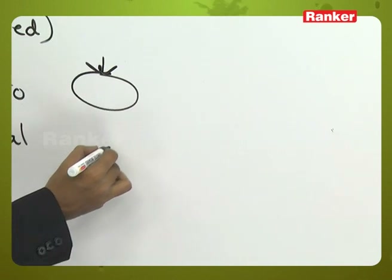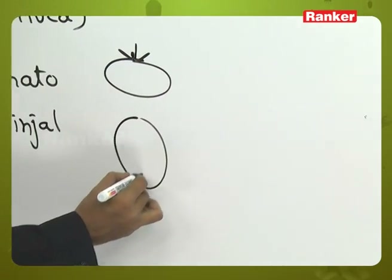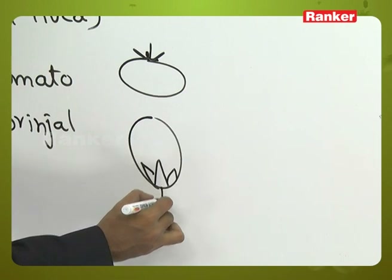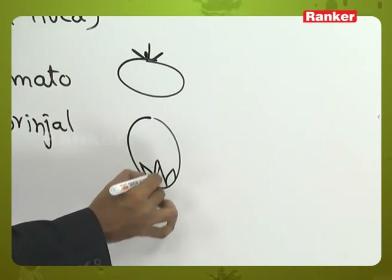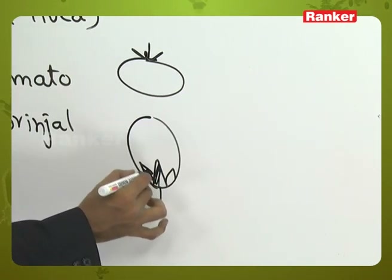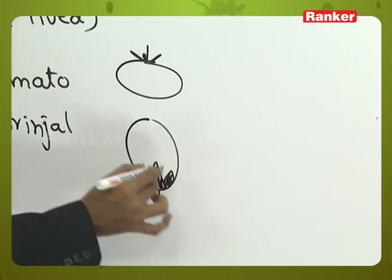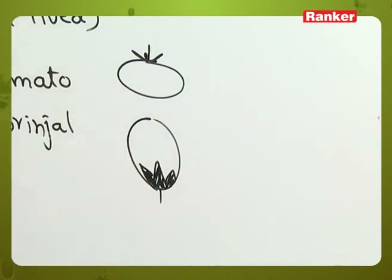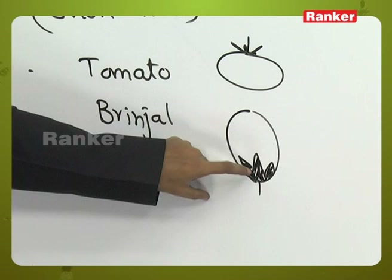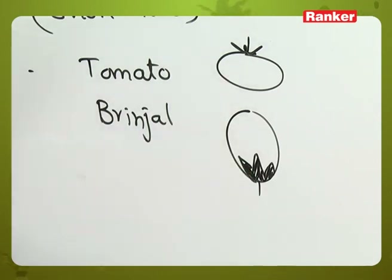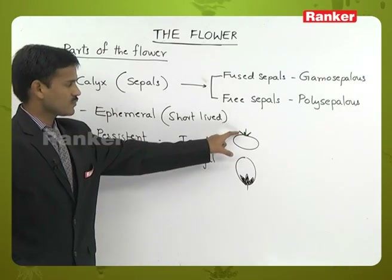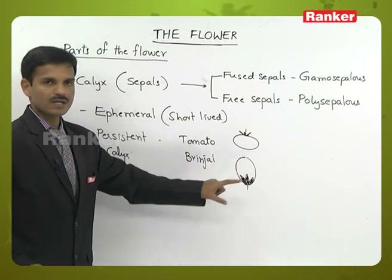In brinjal also, the sepals are attached to the fruit. The sepals can be succulent or store food materials. This is sepal persistent — persistent calyx. In some cases it is not storing food material, but in others it is.